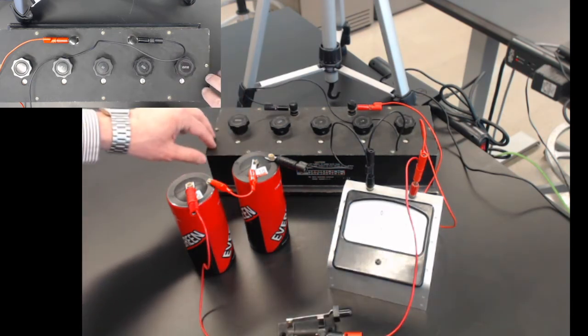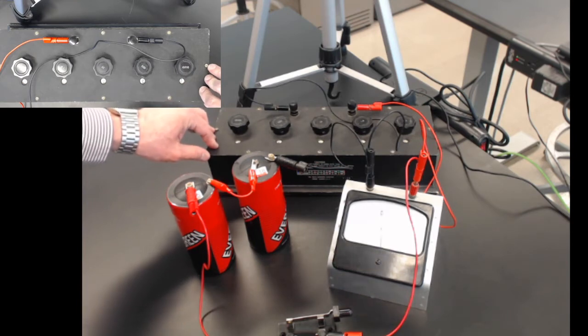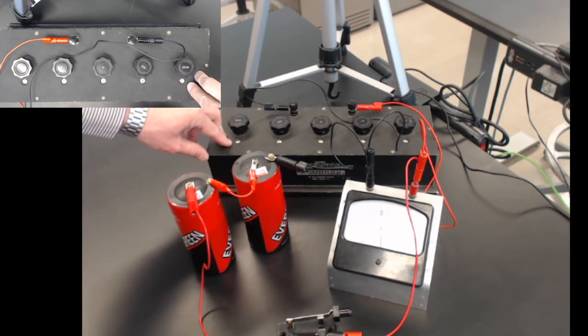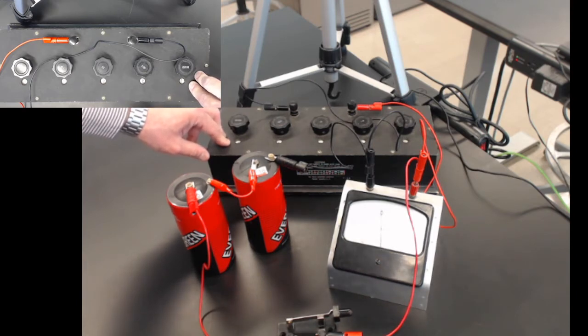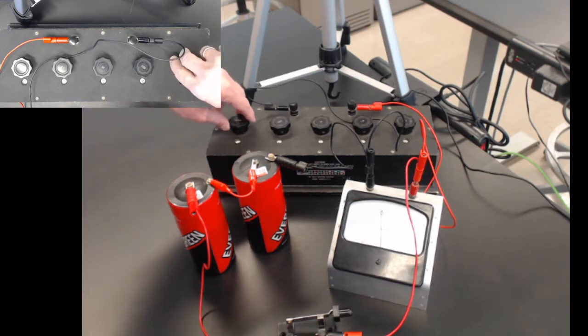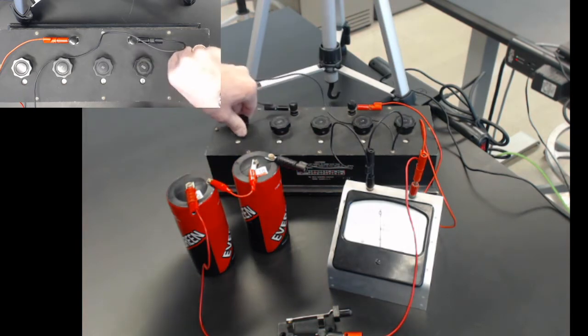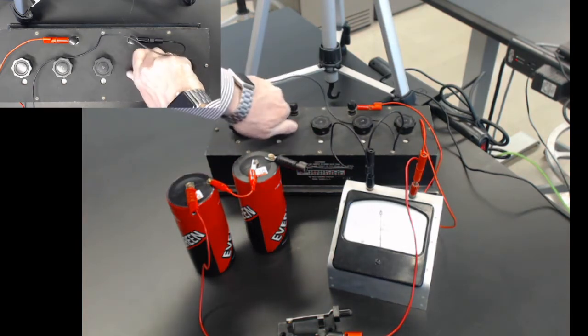At 5,999 ohms on the decade box, we've got 2.1 volts. Sorry, 5,999 ohms—I'm getting confused between ohms and volts. That's a little high. I'm trying to go down to get it right on the notch.